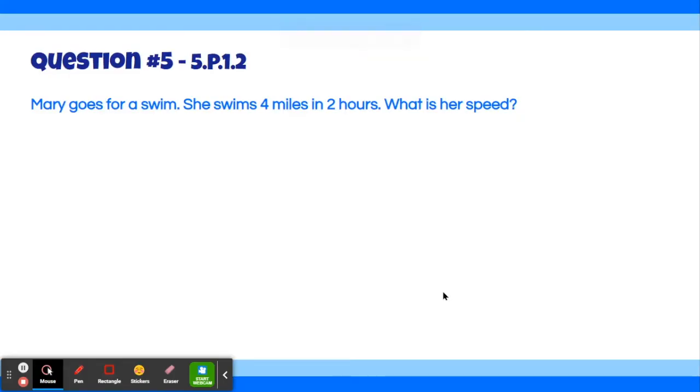Alright, let's move on to question 5. Mary goes for a swim. She swims 4 miles in 2 hours. What is her speed? Well, the answer is 2 miles per hour.